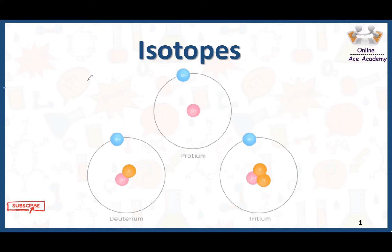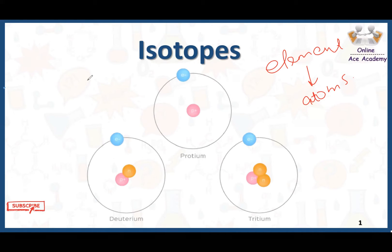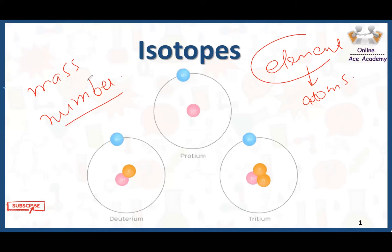As we all know, an element has different atoms inside it, and all the atoms have the same mass number and the same atomic number. But here we are talking about an exception. Isotopes are an exception in which atoms of an element have the same atomic number but different mass numbers. When their mass number is not the same but they are atoms of the same element, this is called isotopes.